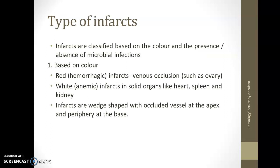What are the types of infarct? Infarcts can be classified based on the color and on the presence or absence of microbial infections. Based on the color, infarcts are noted to be red infarcts, also called hemorrhagic infarcts, and these are seen when there is venous occlusion in organs which are usually loose, like ovaries, testes, and lungs. White or anemic infarcts are seen in solid organs like heart, spleen, and kidney.